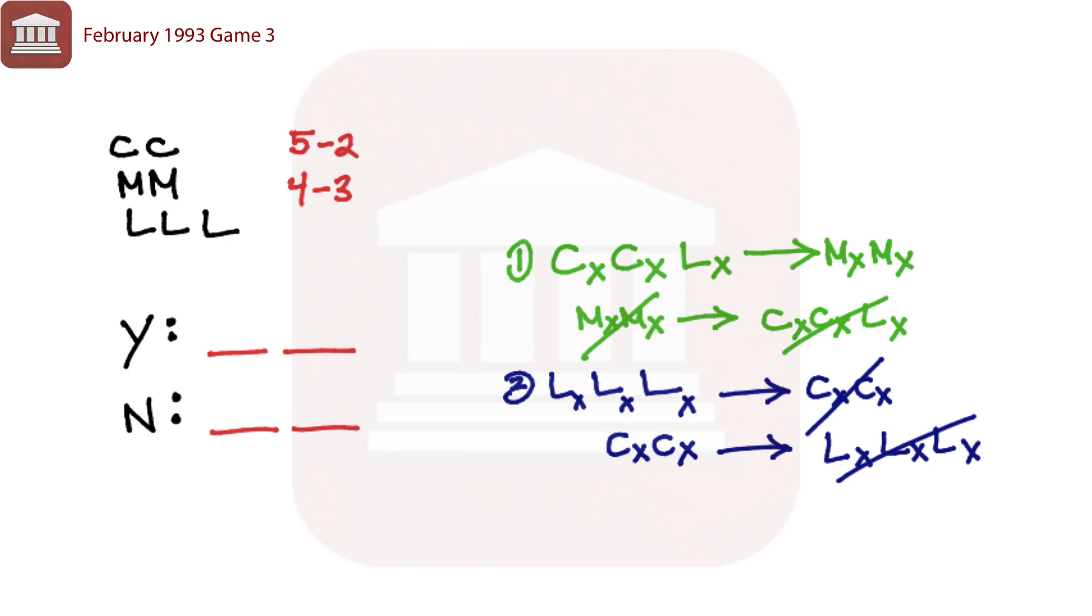And the fourth and final condition tells us that at least one conservative voted against Datlog. So at least one conservative voted against, well, that allows us to make one more deduction.